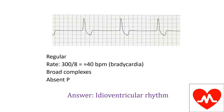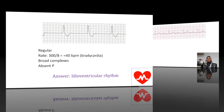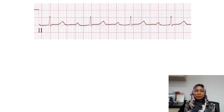If the rate is more than 50 but less than 110, then we call it accelerated ventricular rhythm. If it is more than 110, then it becomes ventricular tachycardia.